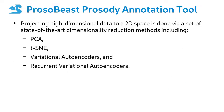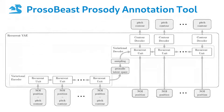Projecting high-dimensional data to a 2D space is done via a set of state-of-the-art dimensionality reduction methods, including principal component analysis, T-distributed stochastic neighbor embedding, variational autoencoder, as well as a recurrent variational autoencoder that we designed and implemented for use in the annotation tool.